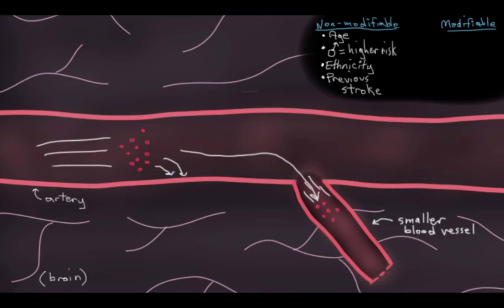And so the walls of these smaller blood vessels start to get a bit thicker to try to compensate for the extra pressure that they're feeling. So this process of the smaller blood vessel undergoing thickening is called hyaline arteriolosclerosis. That's quite a mouthful.